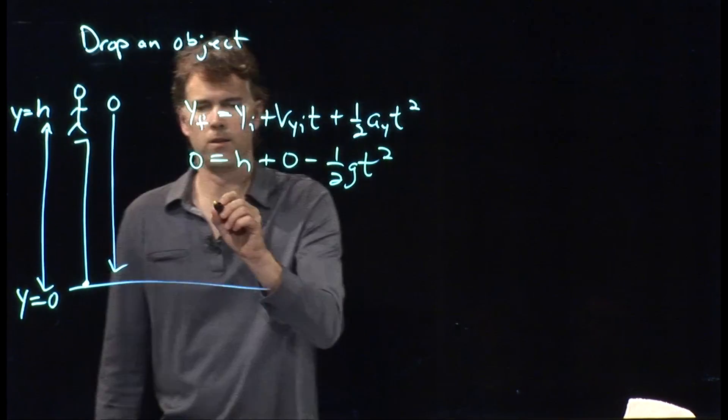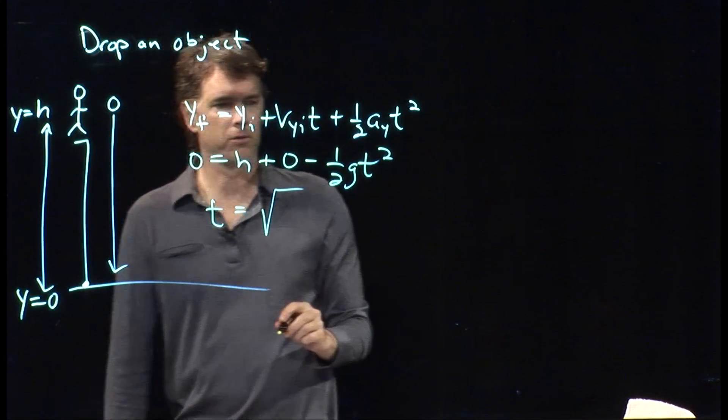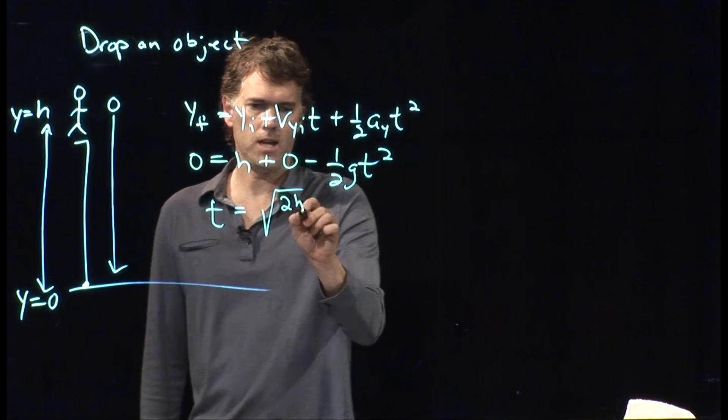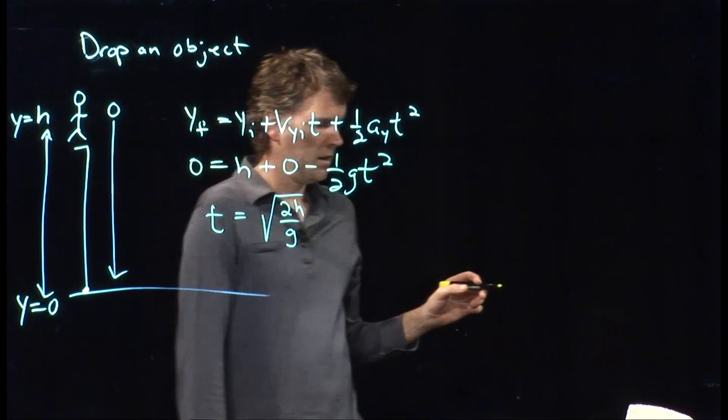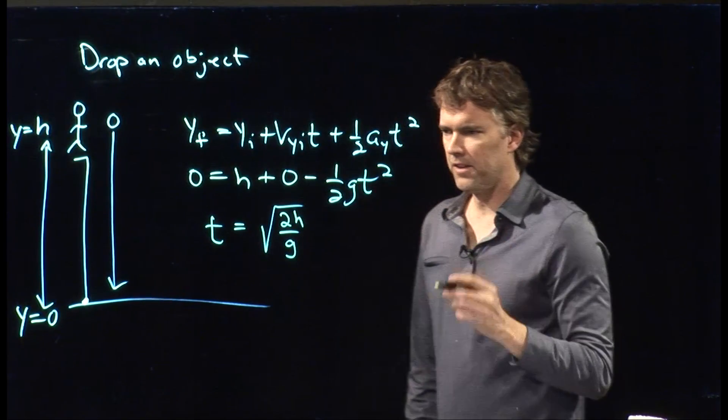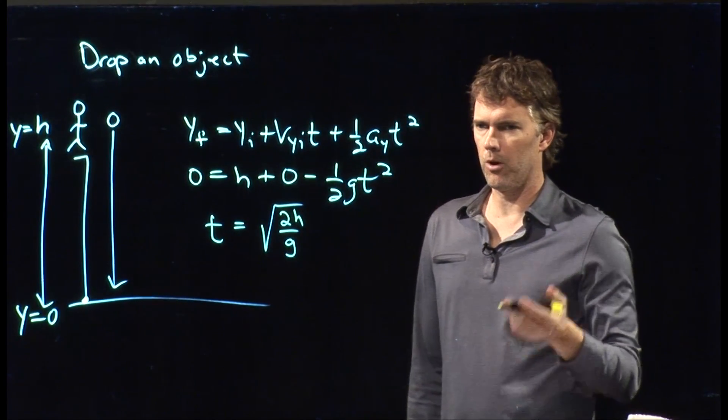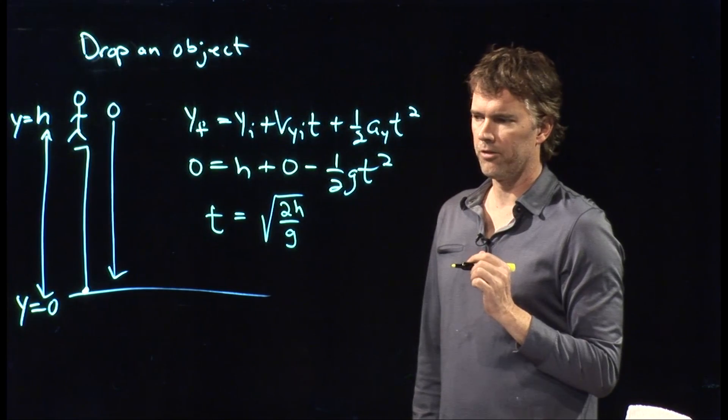And we get t equals the square root of 2h over g. So exactly the same as we had before where we tossed the rock off horizontally.